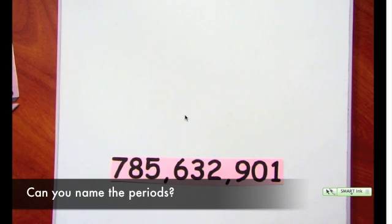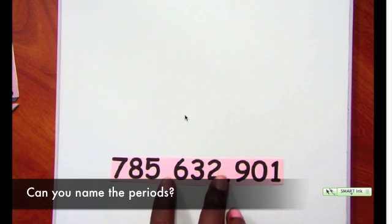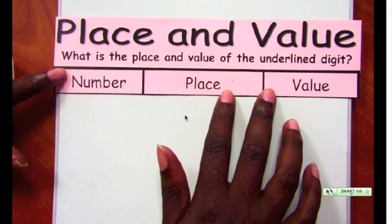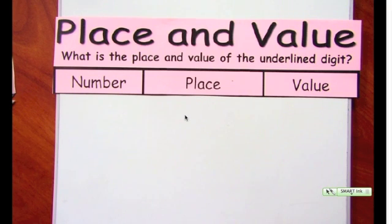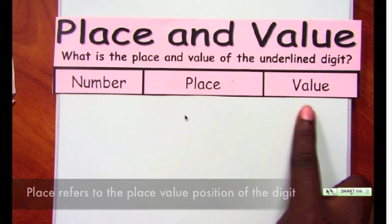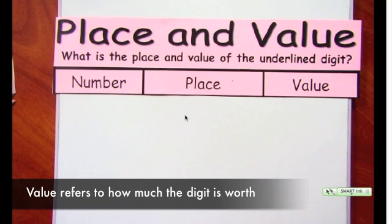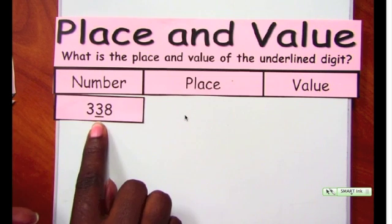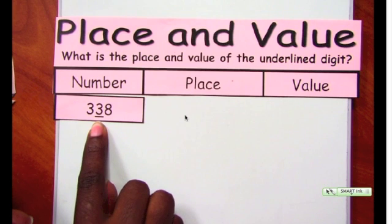Can you name the periods? Let's practice a little more. Say we wanted to find the place and the value of a particular digit within a large number. We need to understand that place and place value are two different things. The place refers to the position of the digit. The value tells us how much that digit is worth. For example, let's look at the number 338 — the underlined digit 3 is in the tens place.